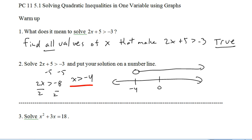For example, if I were to throw in 0, I get 2 times 0 plus 5 is greater than negative 3. I end up with 5 is greater than negative 3, which is true. And that's going to be true for all these infinite values, infinite number of values that are greater than negative 4.